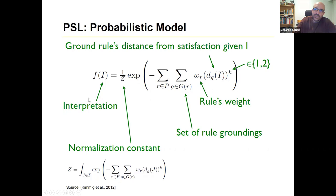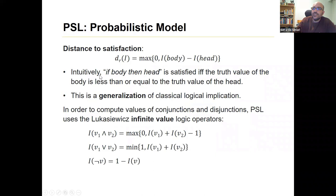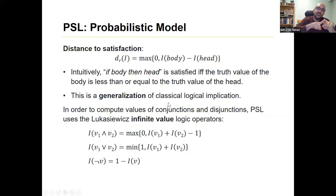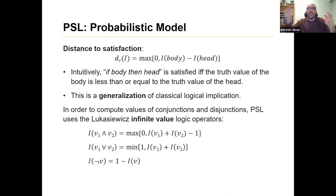Interpretations are just assignments of truth values to everything. Distance to satisfaction is, intuitively, a generalization of the concept of logical satisfaction in soft logic. A rule 'if body then head' is satisfied if and only if the truth value of the body is less than or equal to the truth value of the head. This generalizes the classical case: if you have a false body, you have a true implication — because if you think of it as a promise, 'if body then head,' and the body isn't true, then the promise is still fulfilled, since you only committed to the condition where the body is true.